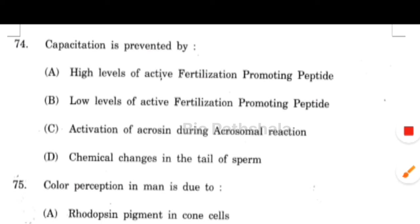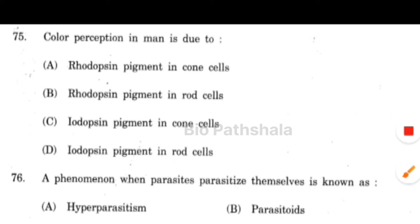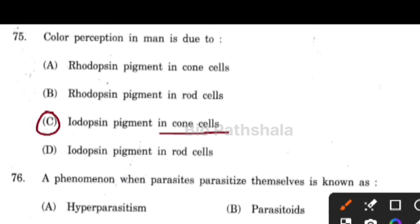Next question: capacitation is prevented by option number A — high level of active fertilization promoting peptides. Next question: color perception in man is due to option number C — opsin pigment in cone cells.